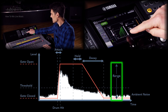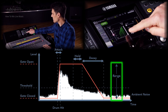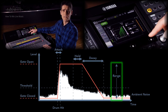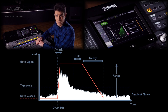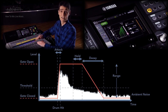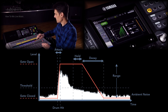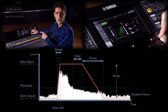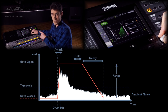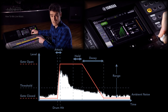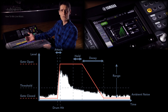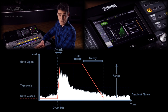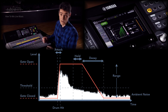Then let's consider the range. This determines whether the gate fully closes or just partially closes. For our situation, we'll keep the default range of minus 50 dB or so. That means the sound of this channel will be reduced by 50 dB when the tom is not being hit.